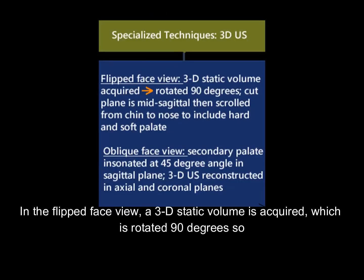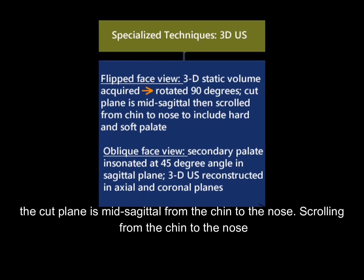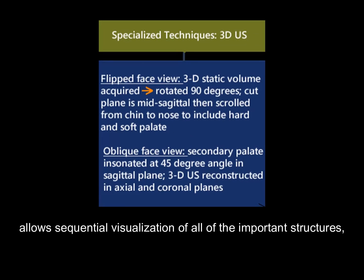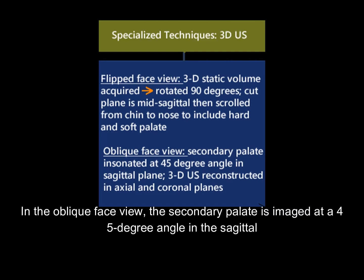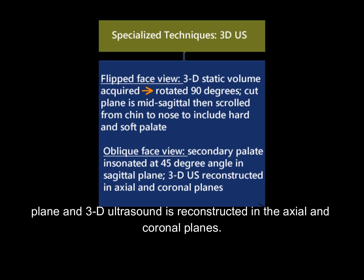In the flipped face view, a 3D static volume is acquired which is rotated 90 degrees so the cut plane is mid-sagittal from the chin to the nose. Scrolling from the chin to the nose allows sequential visualization of all important structures, as well as the hard and soft palate. In the oblique face view, the secondary palate is imaged at a 45-degree angle in the sagittal plane and 3D ultrasound is reconstructed in the axial and coronal planes.